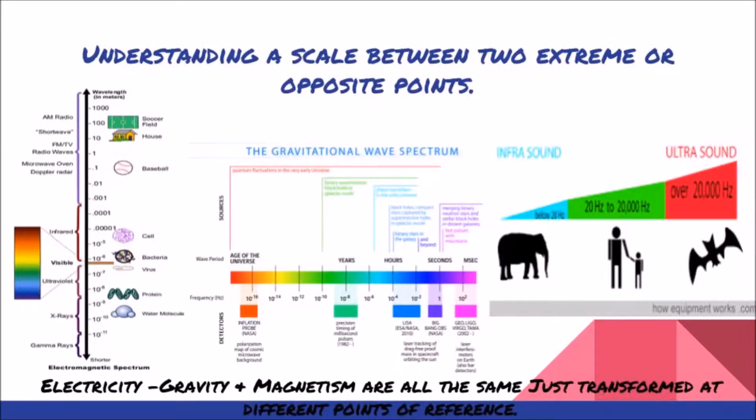Understanding a scale between two extremes or opposite points. Electricity, gravity, and magnetism are all the same, just transformed at different points of reference.